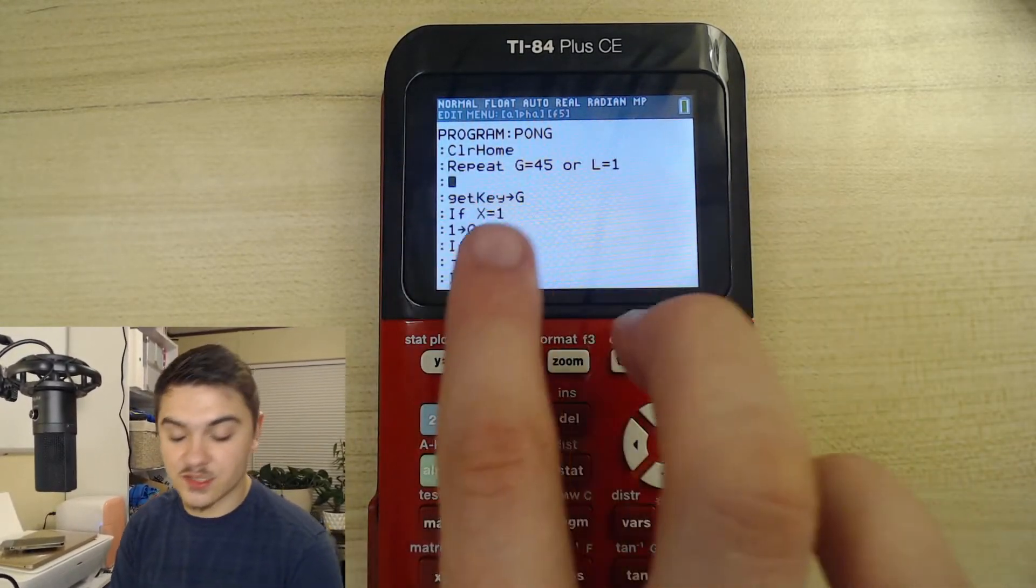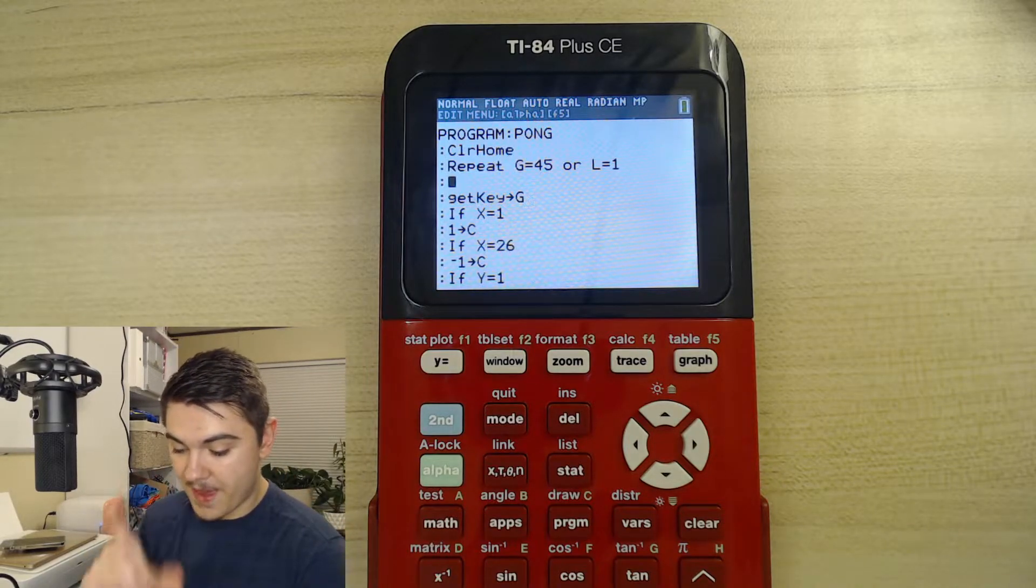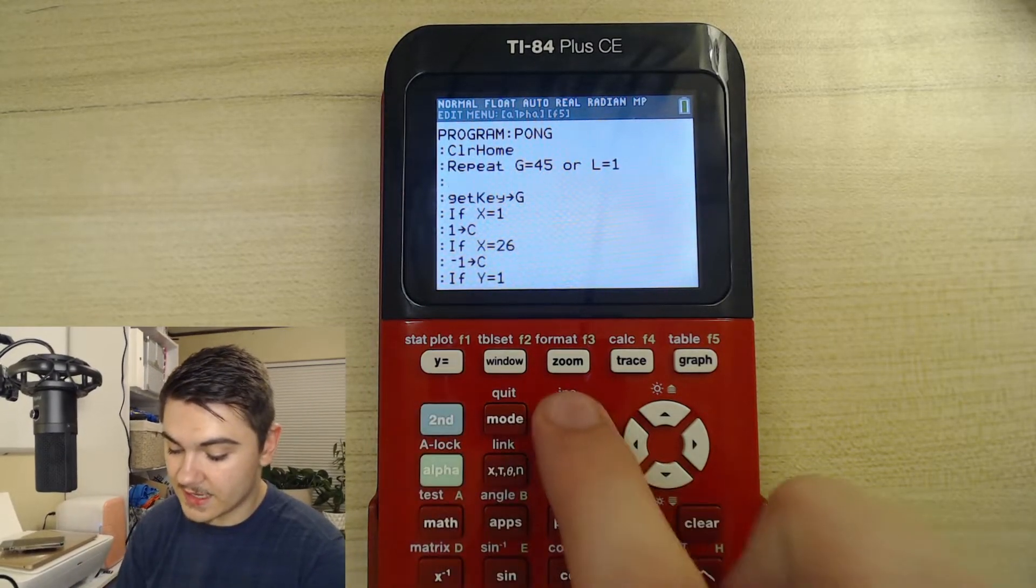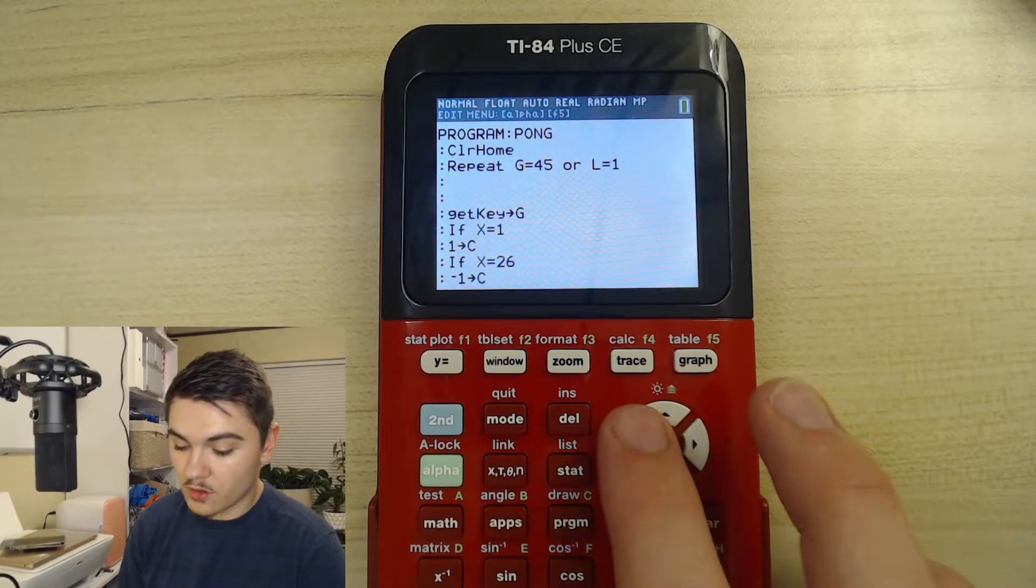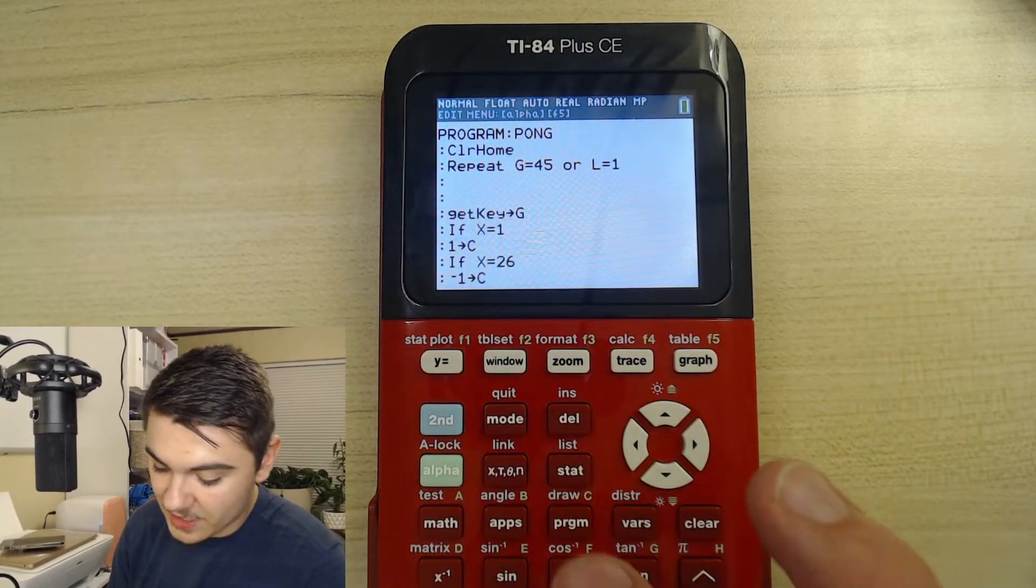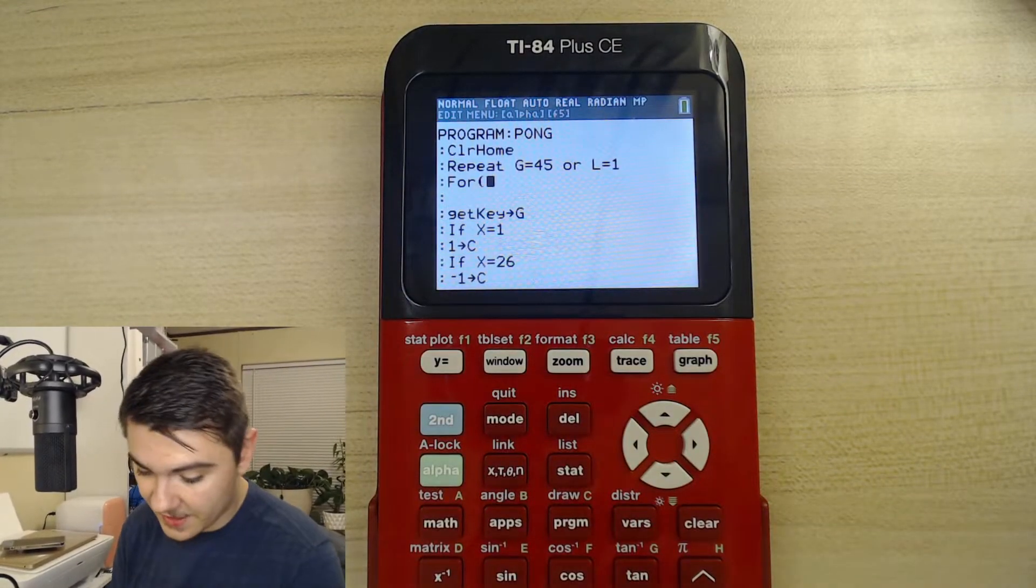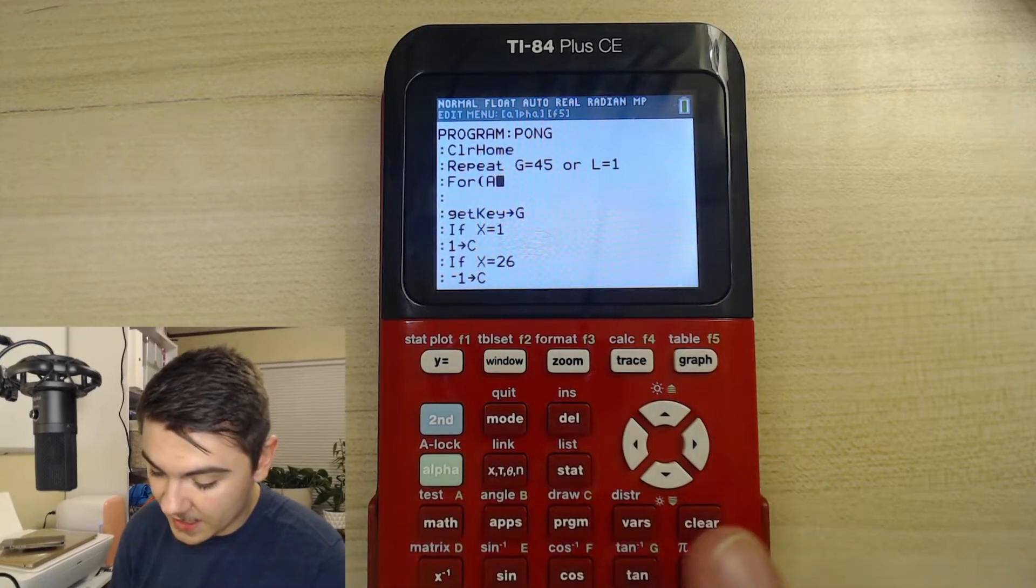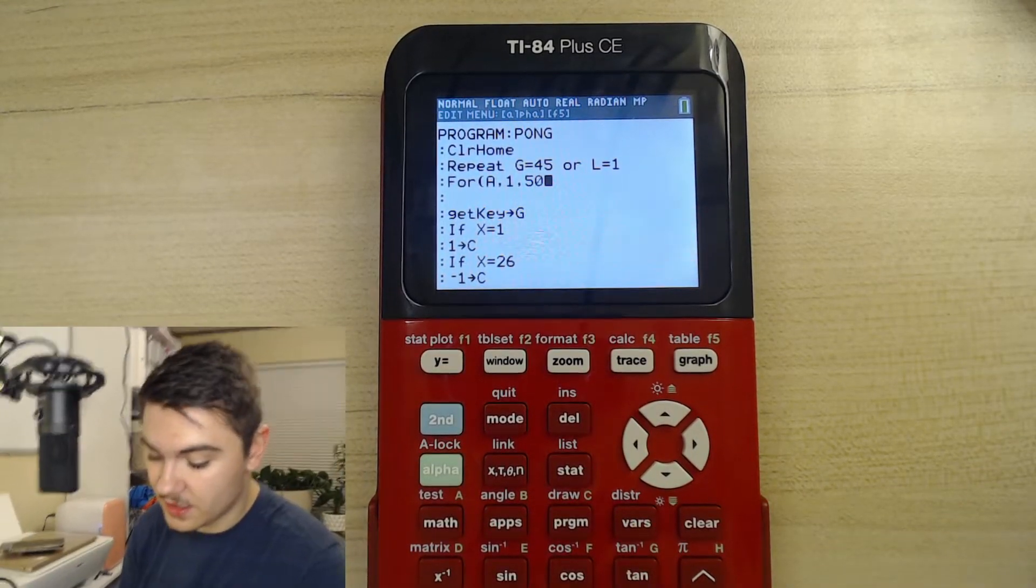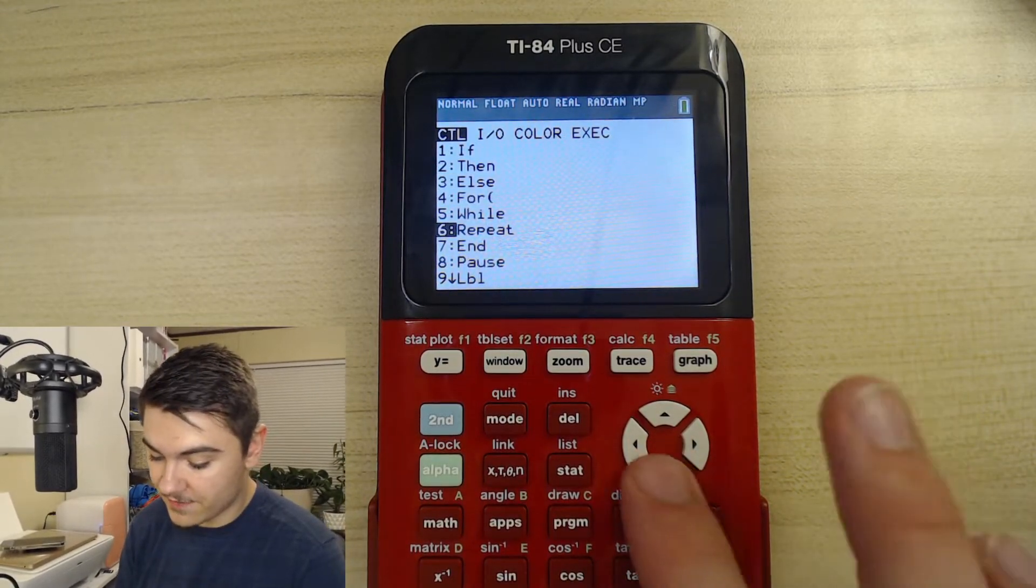So now this is where we're going to insert some lines so that we can actually manage the speed. We're going to press second Del, press enter, scroll to right below repeat, and press program. Scroll down to number four, which is for. This is going to be a for loop. We're going to type a comma one comma 50 enter and then press program and then scroll down to number seven, which is end.